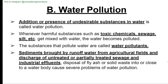Water pollution: the addition or presence of undesirable substances in water is called water pollution. When harmful substances such as toxic chemicals, sewage, or silt get mixed with water, the water becomes polluted. Sediments from agricultural runoff, discharge of untreated sewage and industrial effluents, and disposal of fly ash or solid waste near water bodies cause severe water pollution problems.